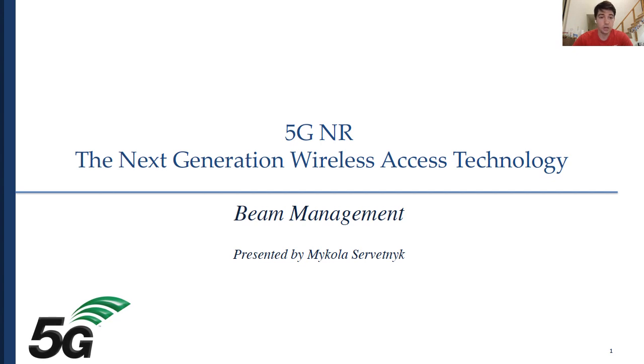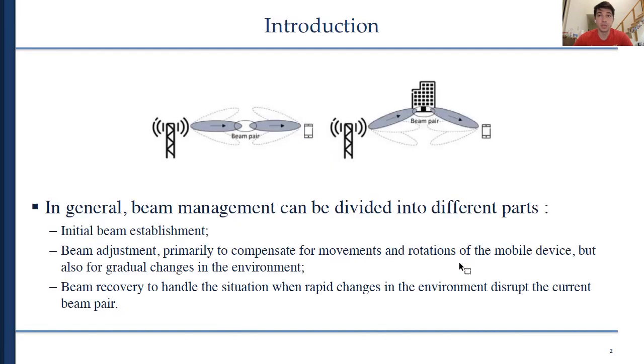Downlink transmissions to different devices located in different directions relative to the base station must therefore be separated in time. Likewise, in the case of analog-based receiver side beamforming, the receive beam can only focus in one direction at a time. The ultimate task of beam management is, under these conditions, to establish and retain a suitable beam pair.